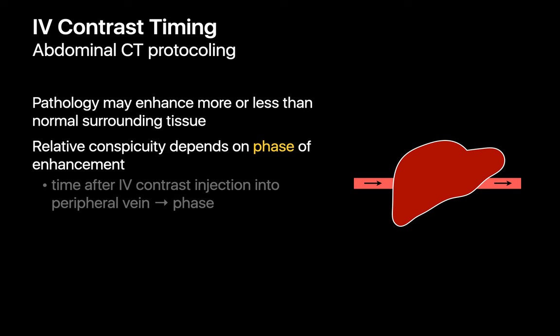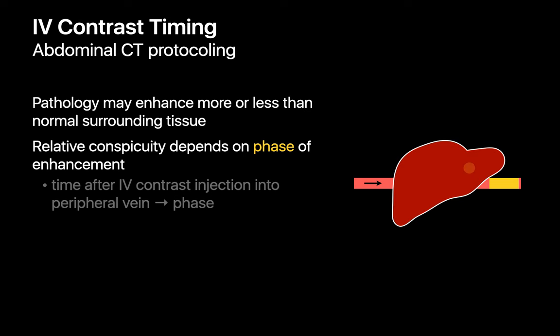An organ where this is particularly noticeable is the liver. It's not unusual to encounter two liver lesions of different etiology that are imperceptible on non-contrast imaging. However, once intravenous contrast is administered and the normal background liver begins to enhance, the enhancement in one lesion may peak very early, only to become indistinguishable as the background liver catches up. And as contrast begins to wash out of the normal background liver, a different lesion may hang on to the contrast longer and become more perceptible after more time has passed. For this reason, enhanced abdominal CT protocols may sometimes require scans at more than one time point after IV contrast injection.